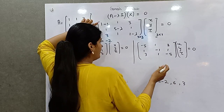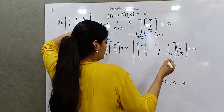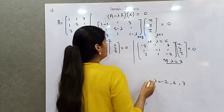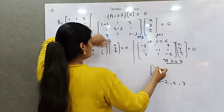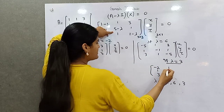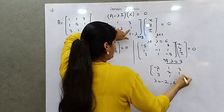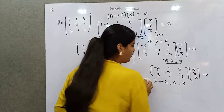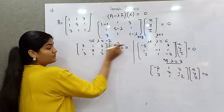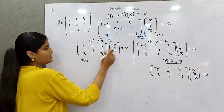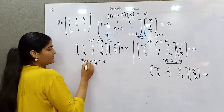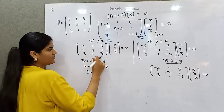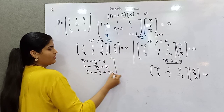Similarly, putting lambda = 3: 1 minus 3 is minus 2, 5 minus 3 is 2, 1 minus 3 is minus 2. Solving all three substitutions gives the system for lambda = -2: 3x + y + 3z = 0 and x + 7y + z = 0 and 3x + y + 3z = 0.